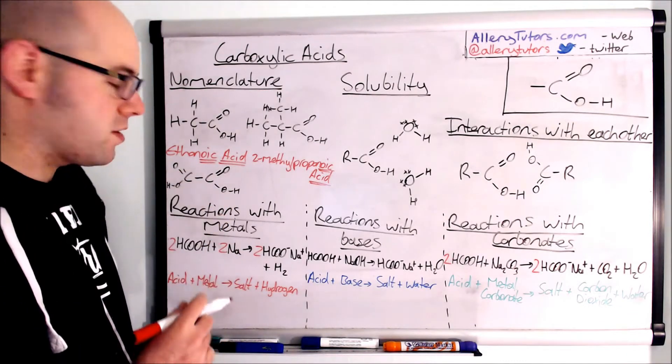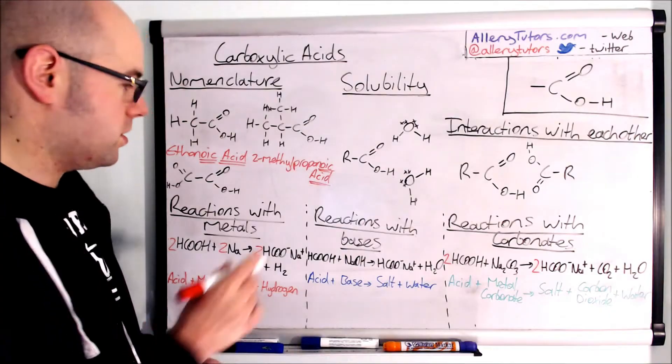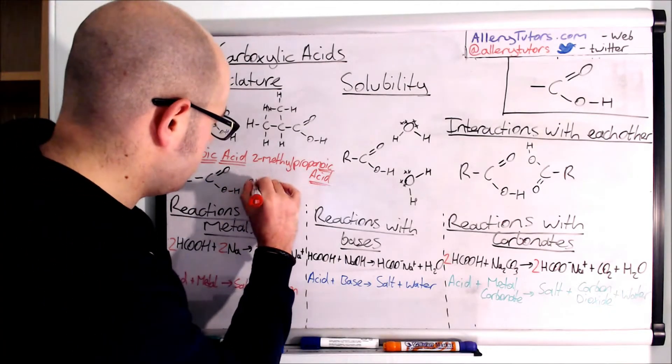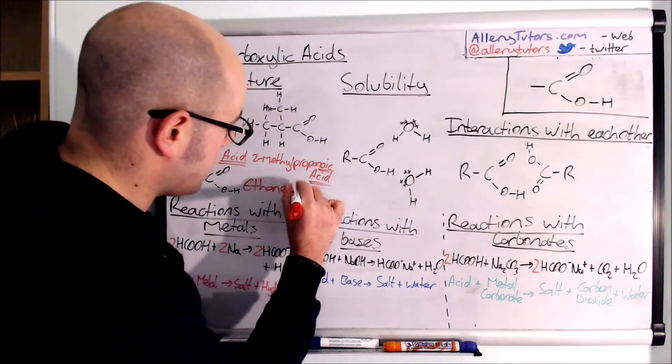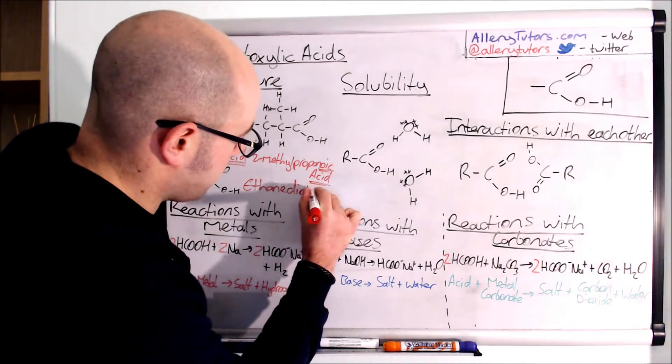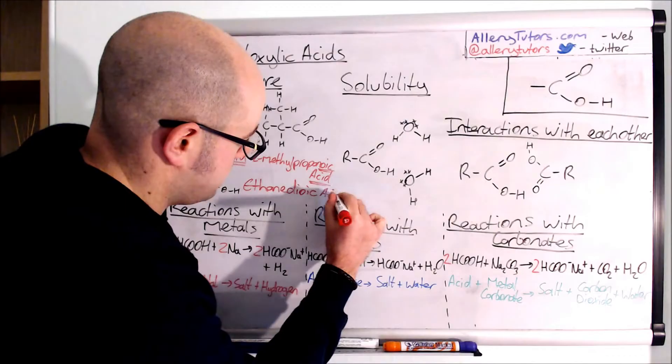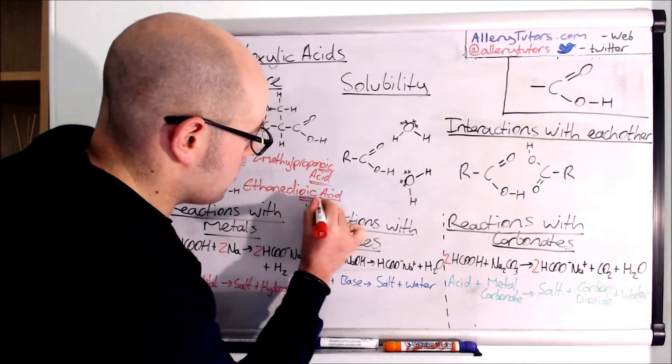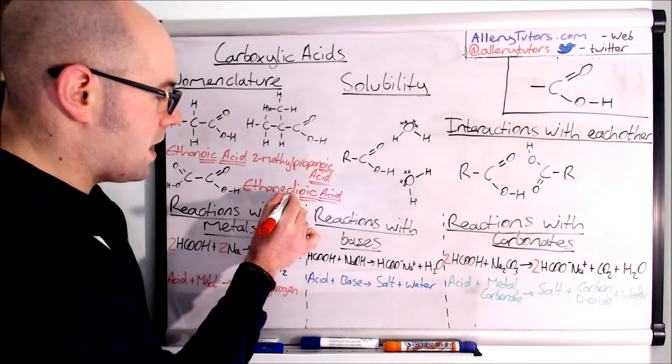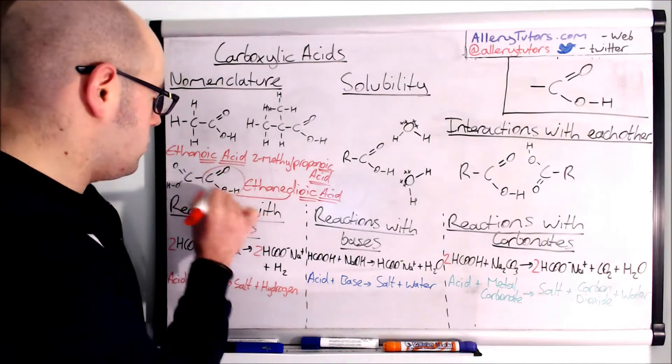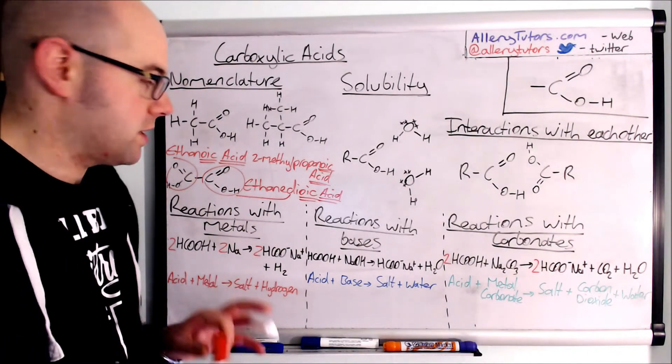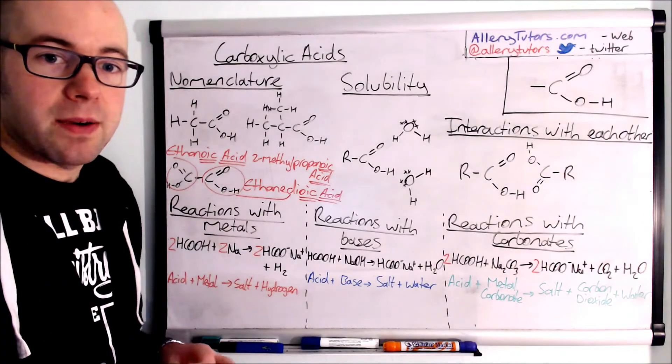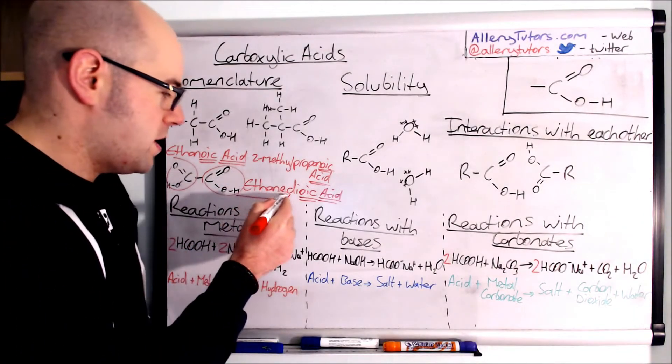So this one in this case is going to be two carbons. So this is going to be ethane. Put the E in and then it's dioic acid. So you see we still end it in oic acid but we've got the di bit in there to say that we have two of these functional groups that are at the end and because we've got two carbons that's going to be ethanedioic acid. So watch out for that one with the E in the middle.